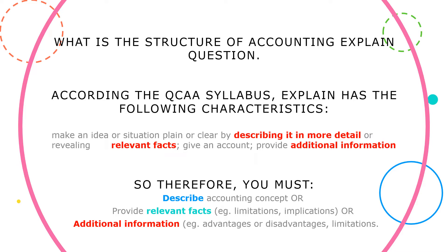You have to provide relevant facts and also additional information. You must describe accounting concepts and provide facts - they could be limitations or implications, for example on profitability, on efficiency, on liquidity of a business. Additional information could also be in the form of advantages and disadvantages and limitations.